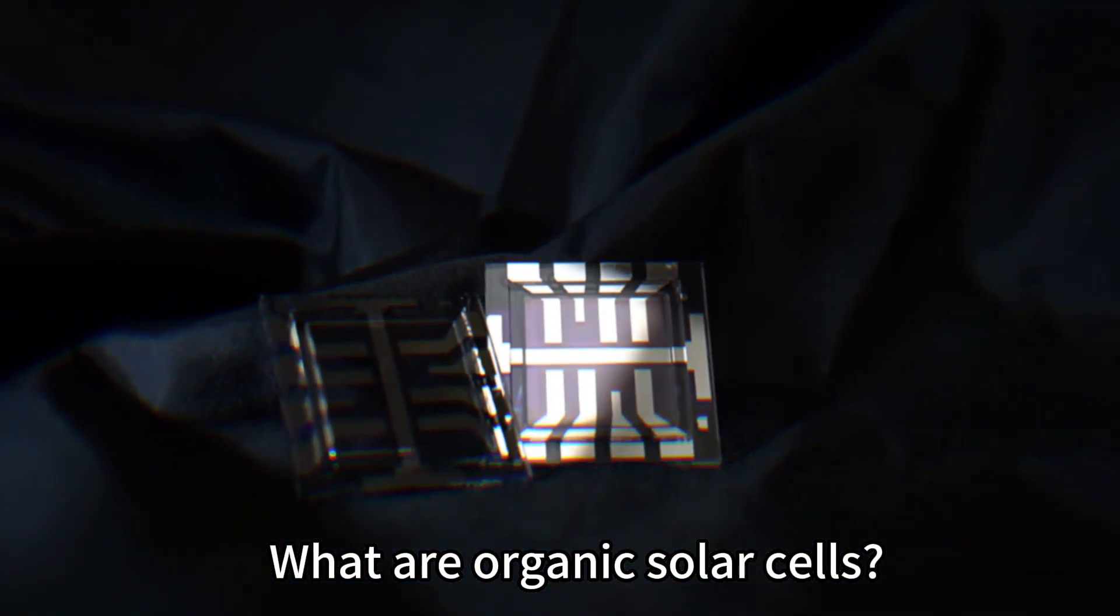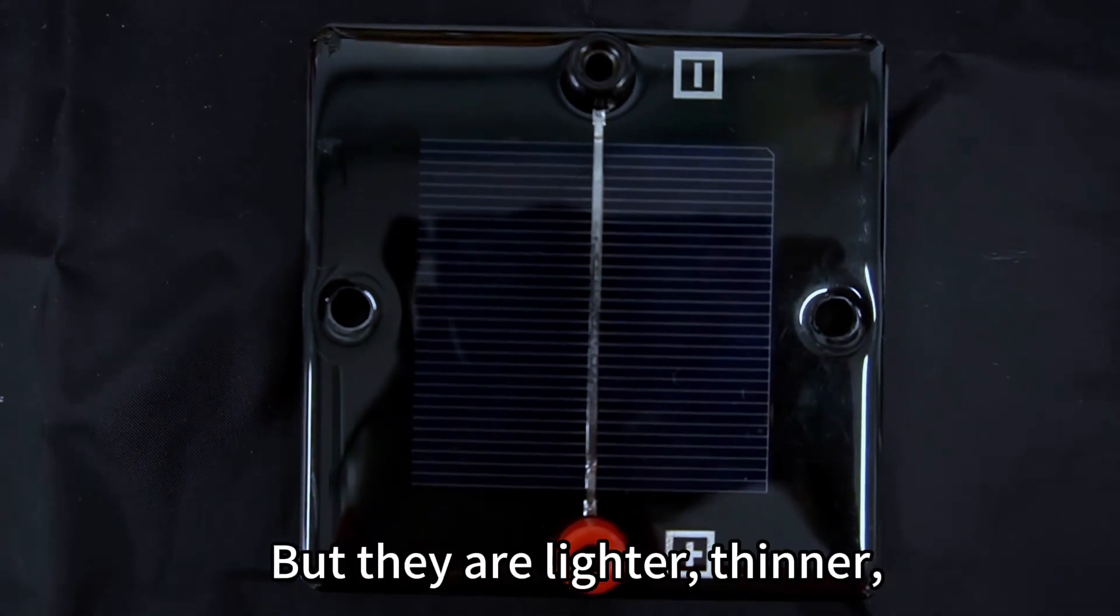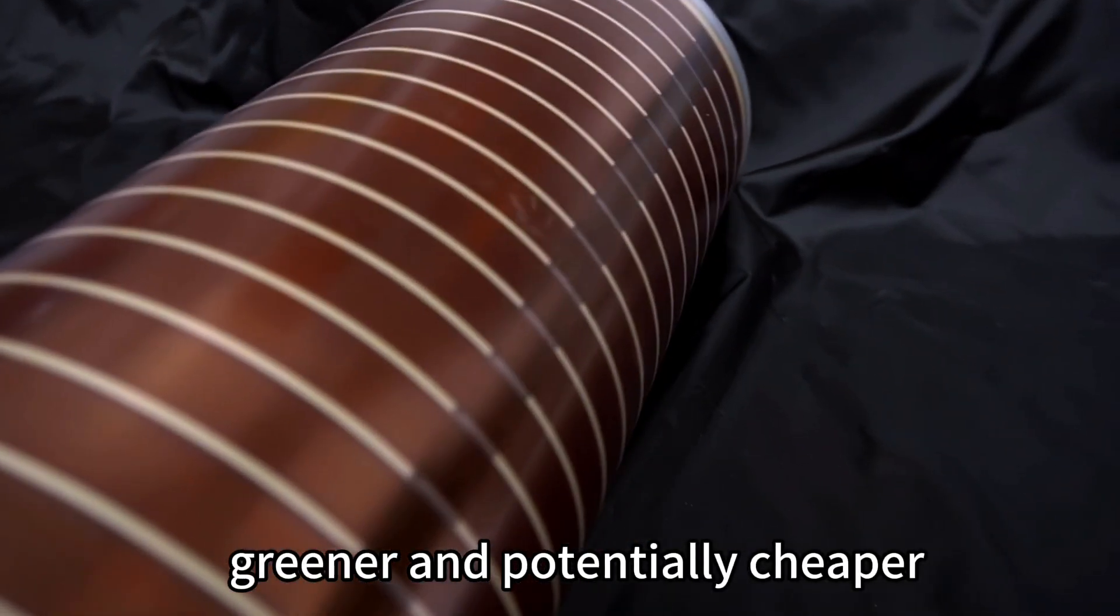What are organic solar cells? They are just like the silicone panels you've seen around, but they are lighter, thinner, greener and potentially cheaper.